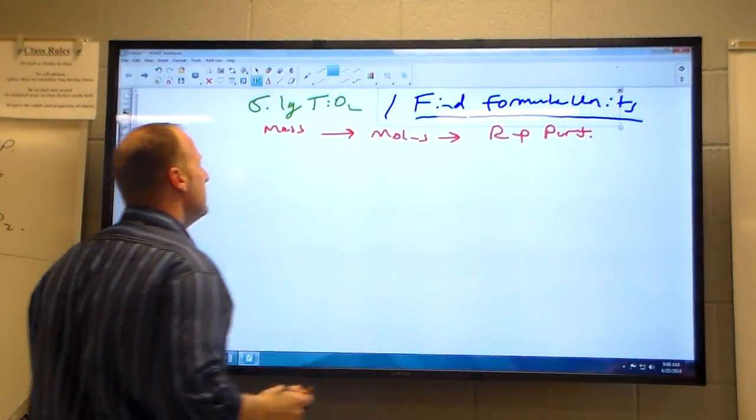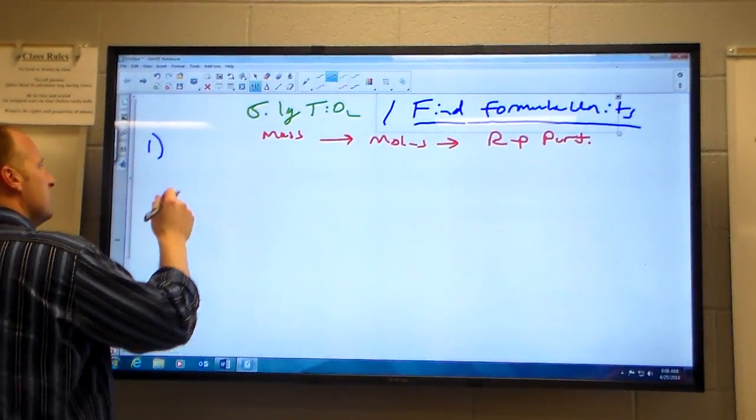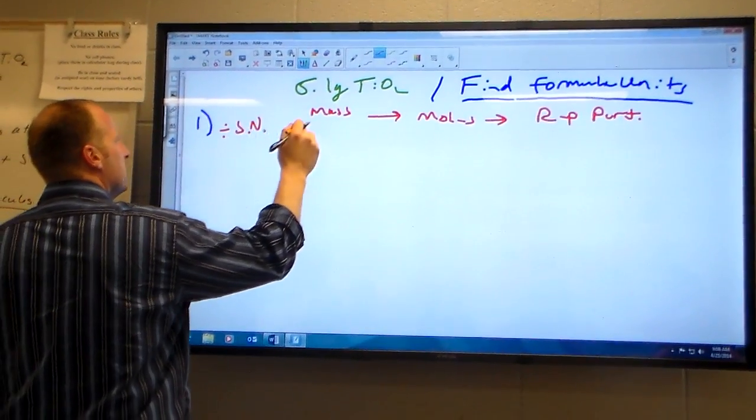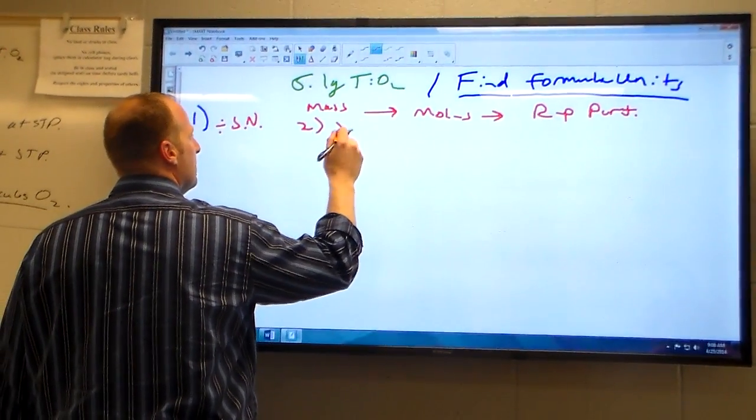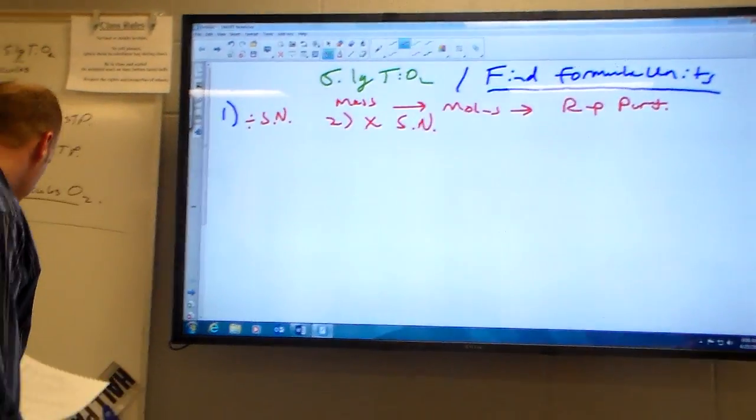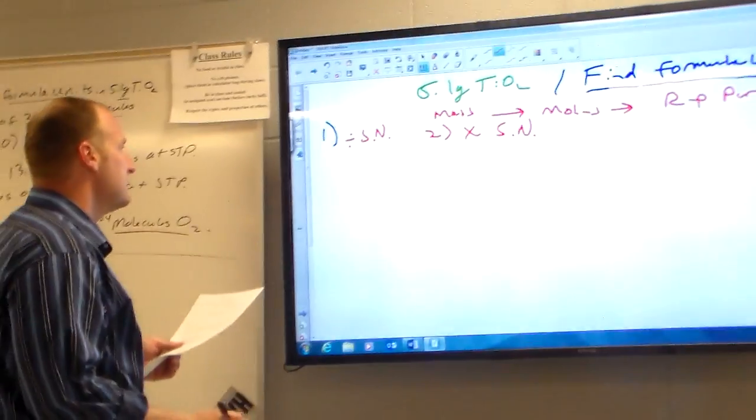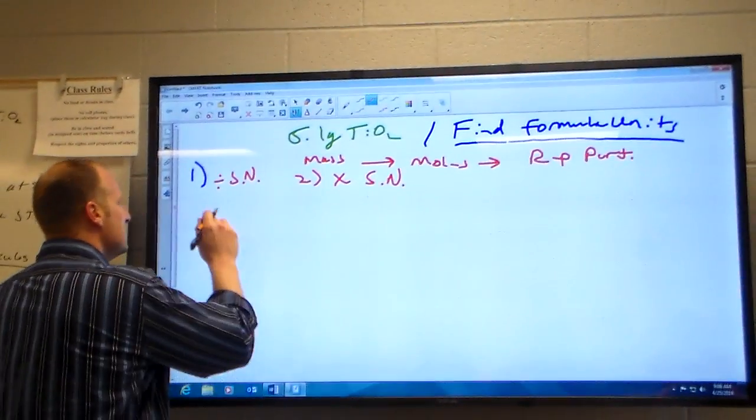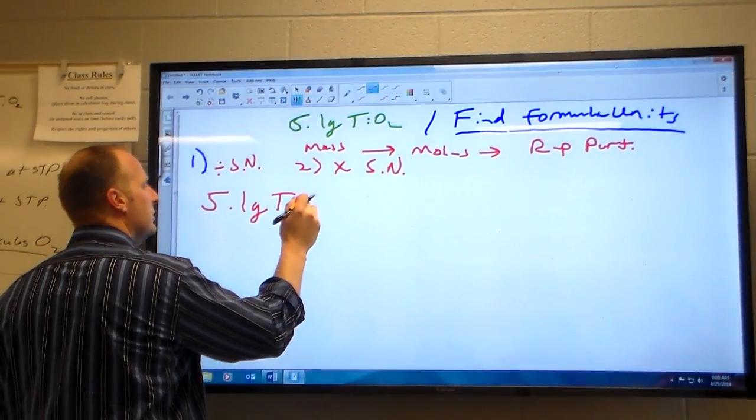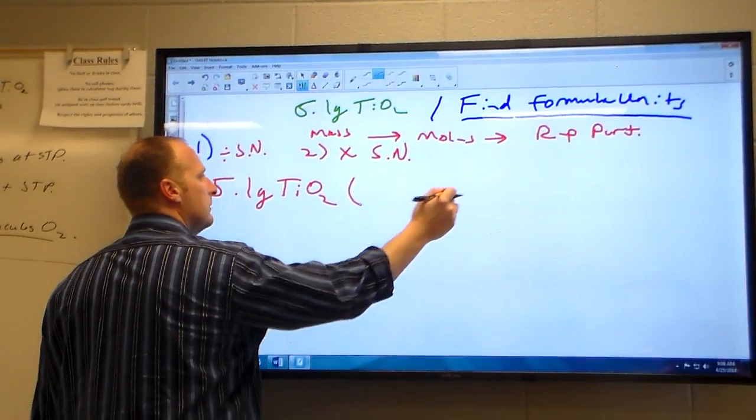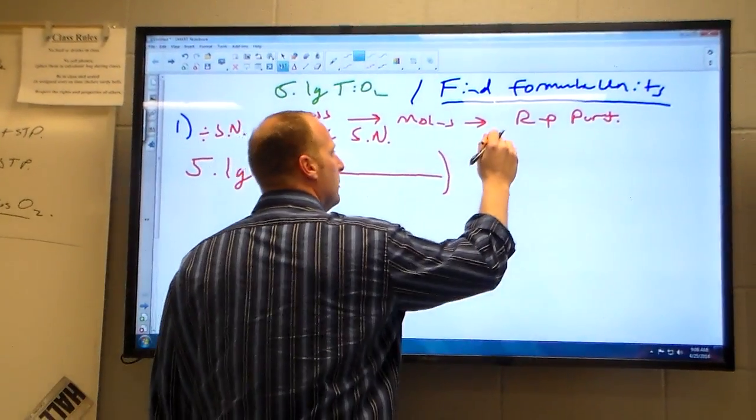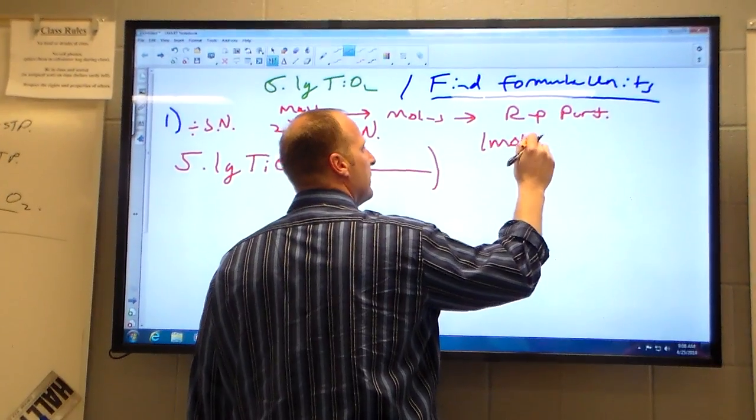I told you the summary of the two steps is to divide by a special number. The second step is to multiply a special number. That's the basic process that we're going to do. In the first step, you've got to take 5.1 grams of TiO2, and I need to know one mole of TiO2.